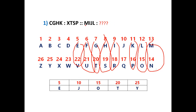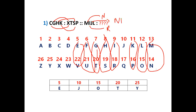Now applying this to the first problem: C opposite is X — CX. G opposite is T — GT, grand total. H opposite is S — HS, high school. K opposite is P — KP. M opposite is N. I opposite is R. J opposite is Q. L opposite is O. So the answer for this question is N, R, Q, O.